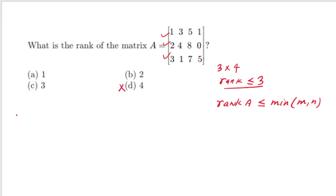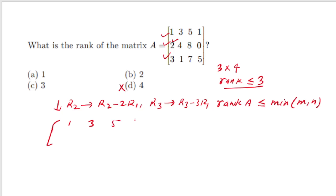Recall that rank of matrix A is less than or equal to the minimum of the number of rows and the number of columns. Here the minimum is 3, so the rank can't be greater than 3. To find the rank, we reduce the matrix to row echelon form. We replace R2 by R2 minus 2·R1, and R3 by R3 minus 3·R1. After the operation we get row 1: 1 3 5 1, row 2 becomes 0 −2 −2 −2, and row 3 gives elements −8 −8 and 2.